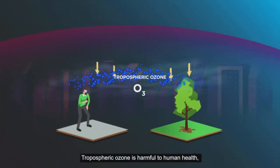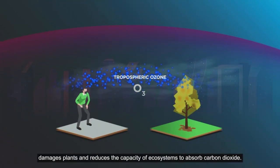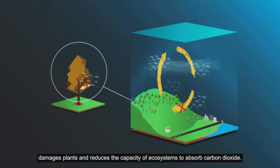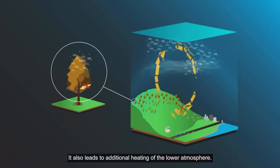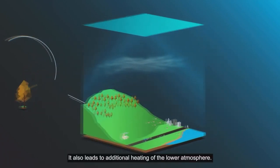Tropospheric ozone is harmful to human health, damages plants and reduces the capacity of ecosystems to absorb carbon dioxide. It also leads to additional heating of the lower atmosphere.